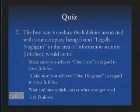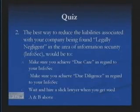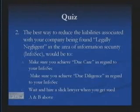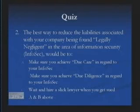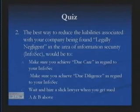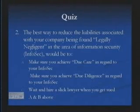Question two: The best way to reduce the liabilities associated with your company being found legally negligent in the area of information security would be to: A, make sure you achieve due care in regard to your InfoSec; B, make sure you achieve due diligence in regard to your InfoSec; C, wait and hire a slick lawyer when you get sued. The right answer is A and B both. The way to keep your company from being found legally negligent is to establish that you've been properly exercising both due care and due diligence.